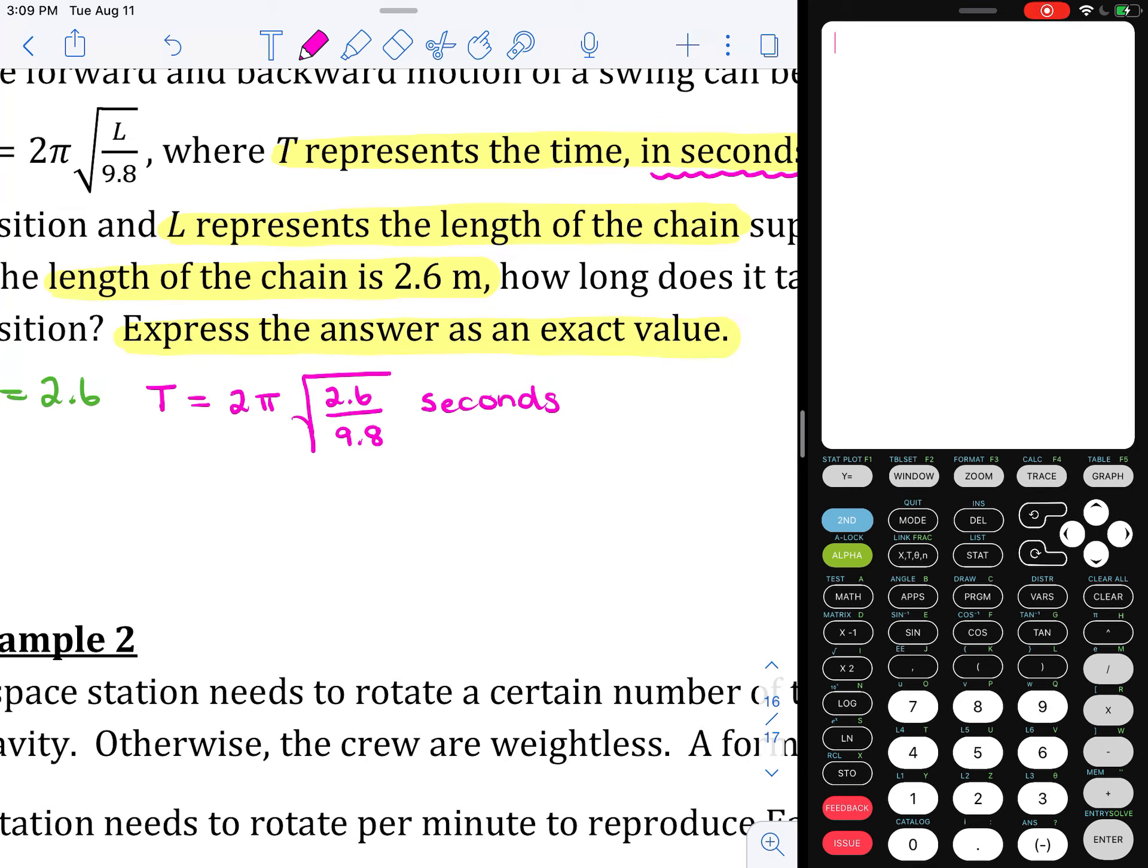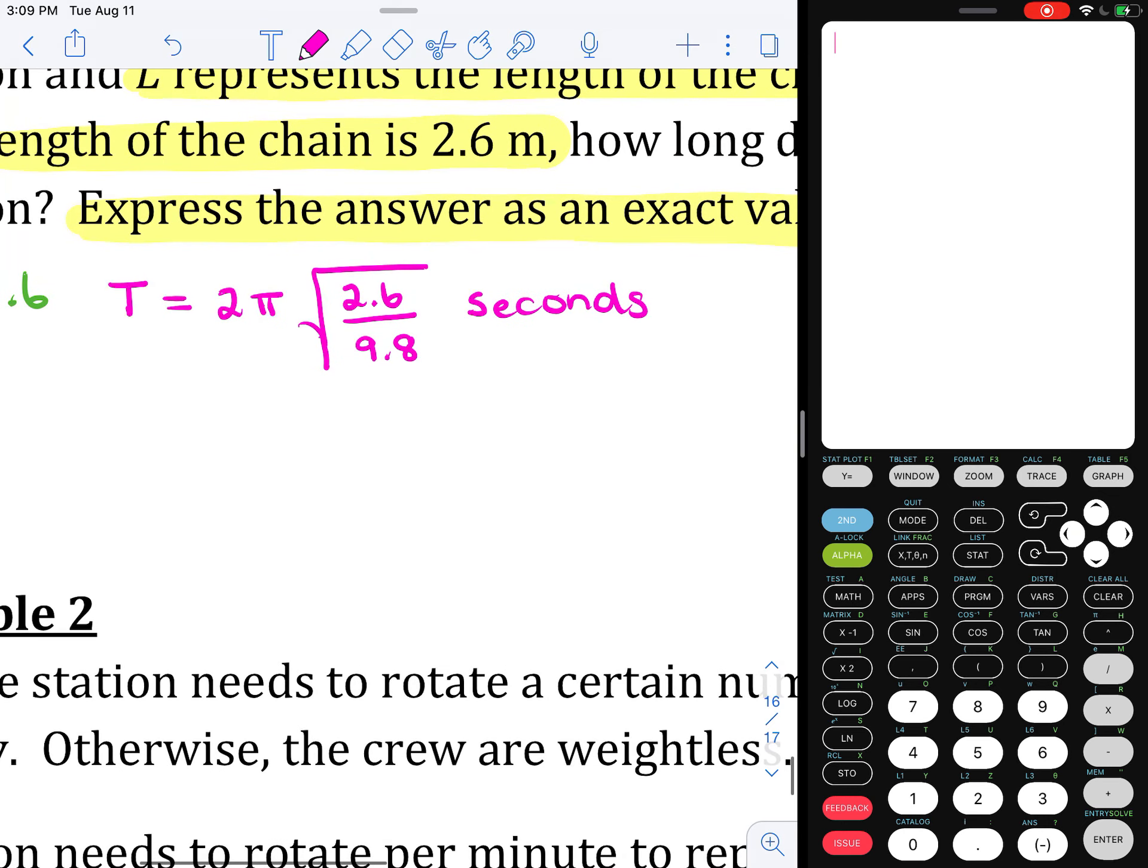I'm going to have us tidy this up. We're just going to simplify this at this stage. What I'm going to do is write this as T equals 2π times the square root of... With this fraction, I'm going to multiply top and bottom by 10. That will give me 26 over 98. It's much easier to reduce a fraction if there aren't any decimals in there.